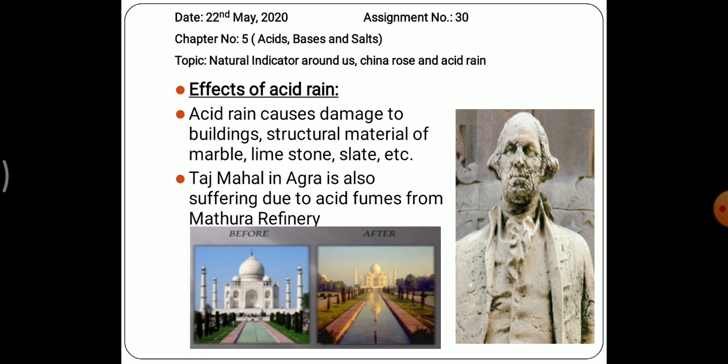In India, we have the Taj Mahal. If we observe it compared to ten years ago, the color of the Taj Mahal has been changing from white to yellowish. The reason behind this is the Mathura refinery, which is releasing sulfur dioxide pollutants, causing the surface of the Taj Mahal to turn yellowish. Acid rain is causing damage to buildings and structural materials such as marble, limestone, and slate, damaging different types of monuments.